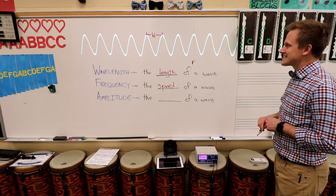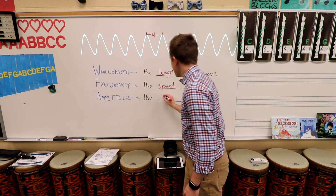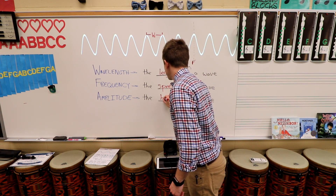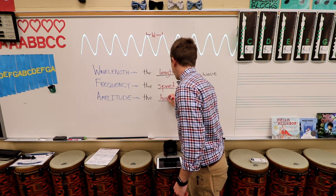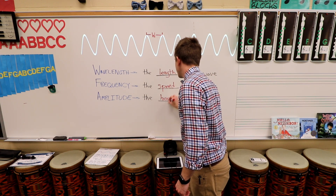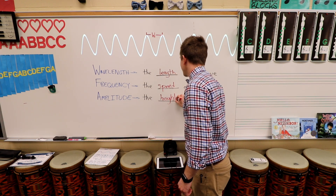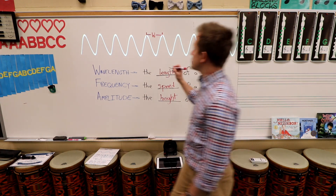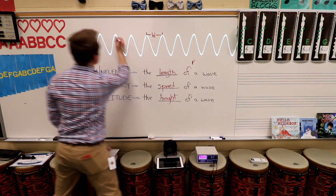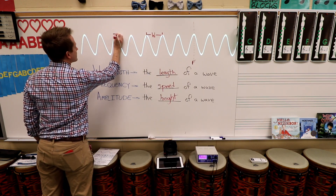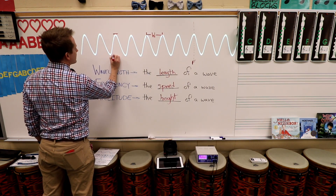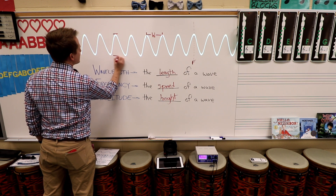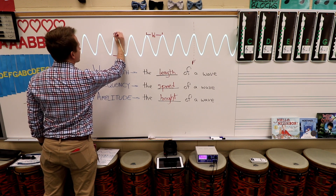Next up, amplitude. The amplitude is the height of a wave — the distance between the top of it and the bottom.